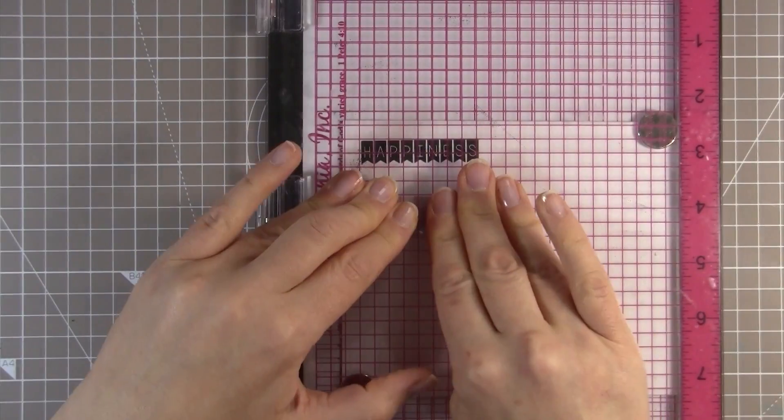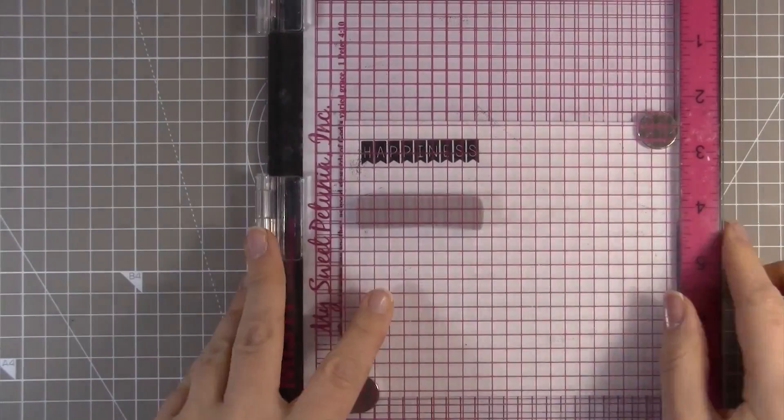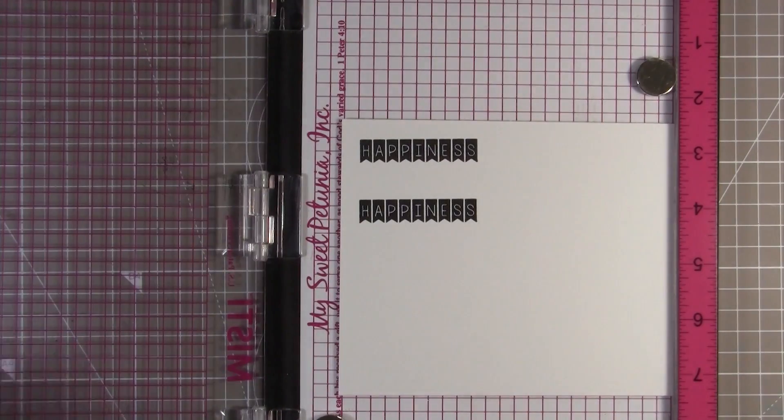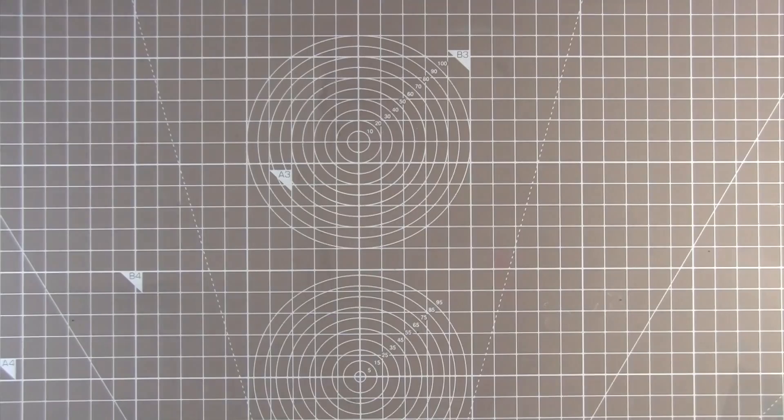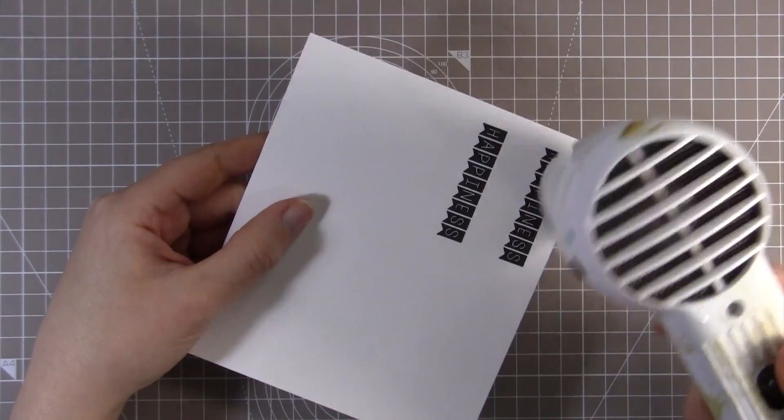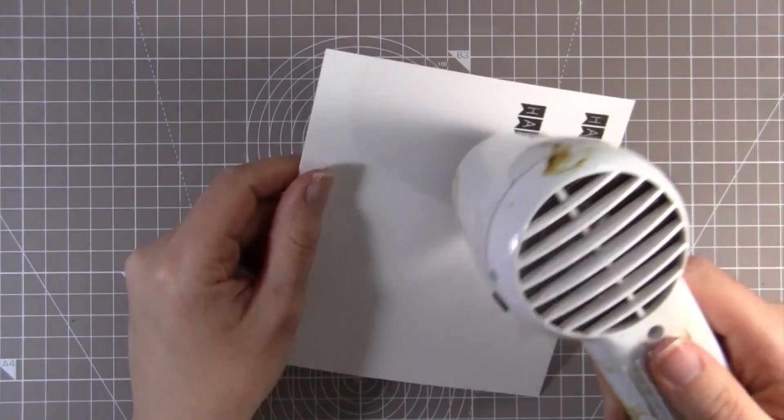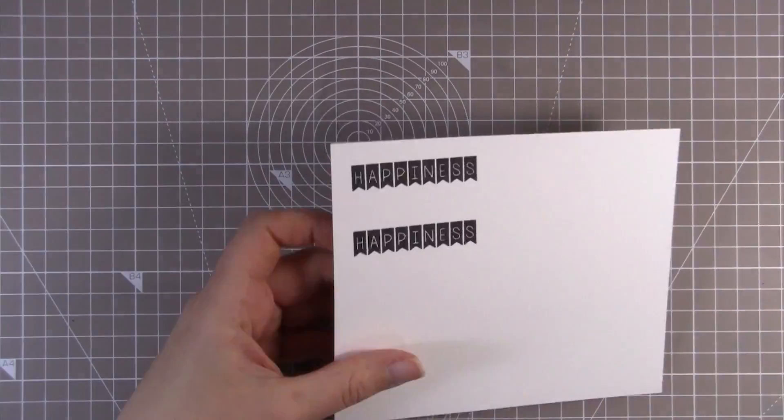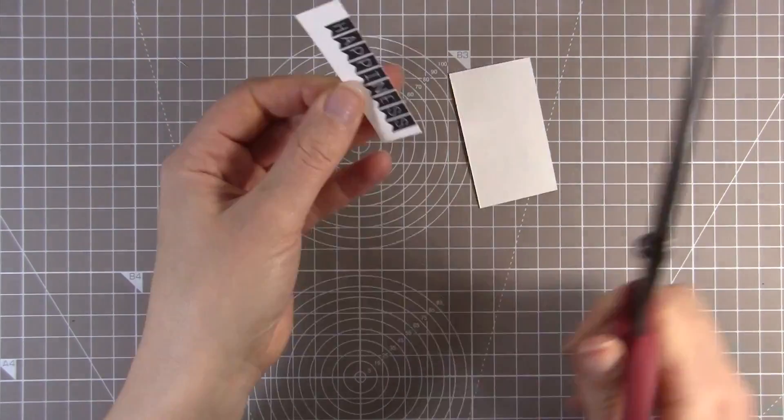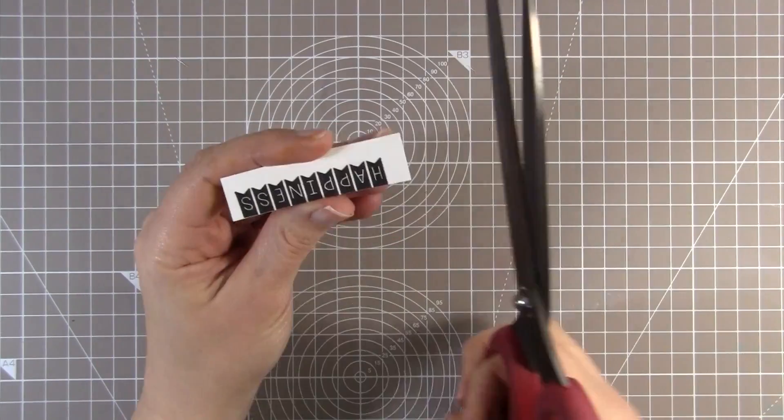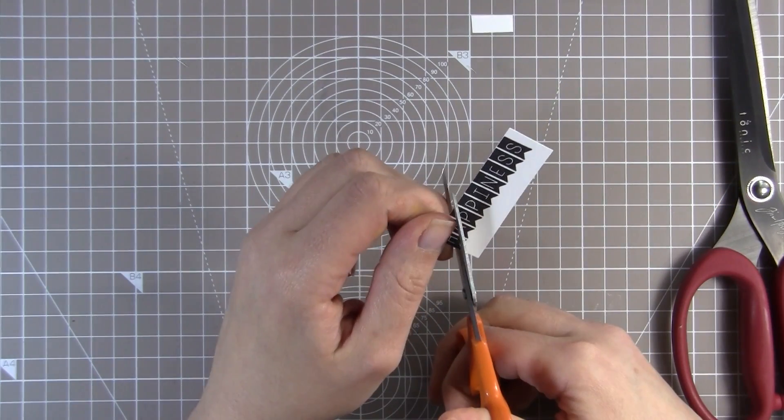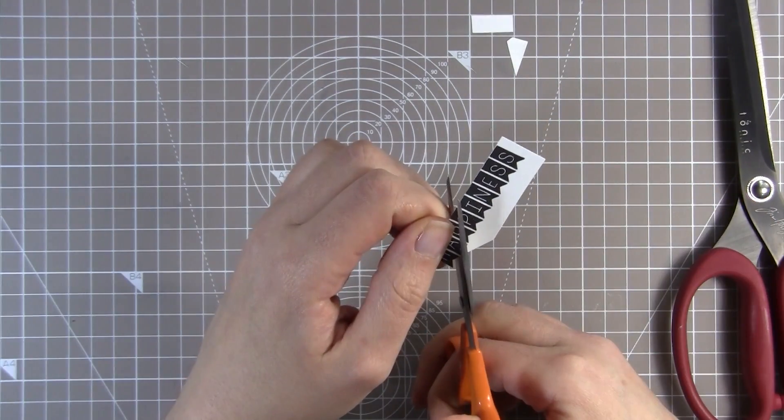So I decided to use one of the sentiments that comes in the summer sentiment set from Stamping Bella. I love this banner sentiment and I've used it before and chopped it up before. I love stamping it and then cutting it apart. Here I've stamped it with Versafine ink twice on a spare piece of that Bristol smooth surface paper simply because it's nice and stiff. It's a nice weight of card so that the banner won't be too flimsy. And it's smooth so it stamps nicely. I'm just going to cut the sentiment apart. I've stamped two just in case I messed one up.